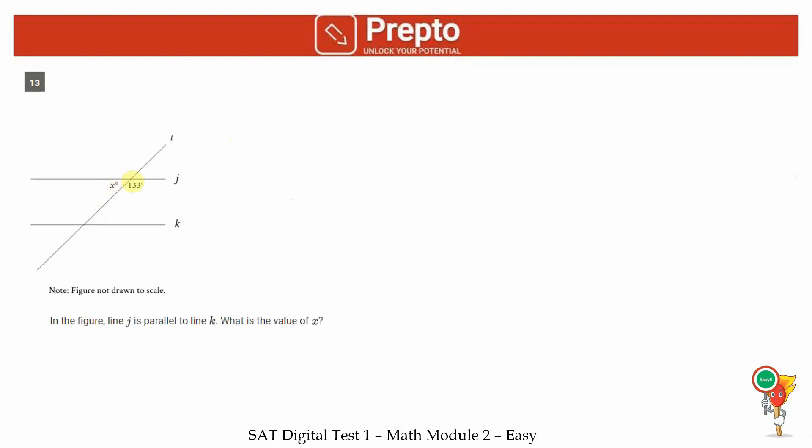Thirteenth question. Here you have two parallel lines. You need to find the value of x. Frankly, we don't even need line L. Just this much is enough. You have x and 133 adjacent in a linear line. So the two of them should add up to give you 180 degrees. Hence x has to be 180 minus 133, which is 47 degrees. You will input 47 as the answer for question 13.